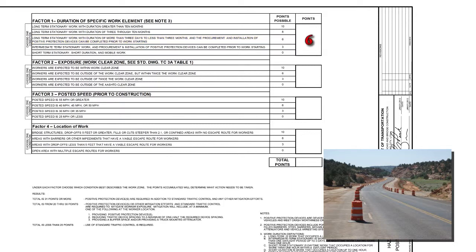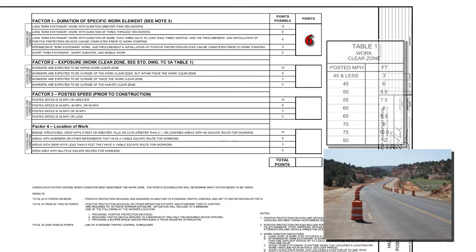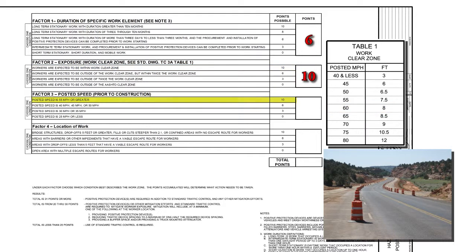Next, what is the exposure of the worker? Let's take a look at TC3A Table 1 for the work clear zone requirements. This roadway has a posted speed of 60 miles per hour for a work clear zone of 8 feet. That being the case, we would choose workers are expected to be inside the work clear zone for 10 points. Next, we know the posted speed of 60 miles per hour for 10 points. Factor 4, location of work: the area is open and workers have multiple escape routes for 0 points. Now we have 26 accumulated points.